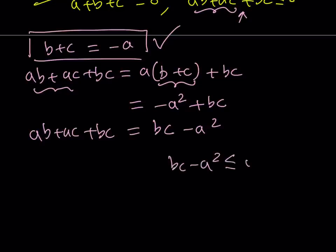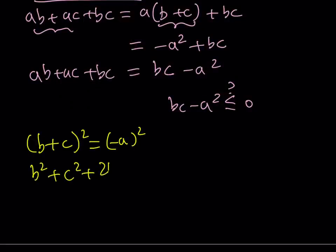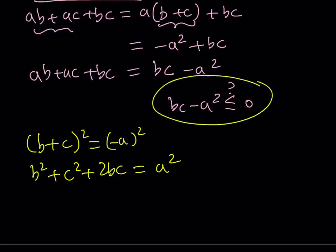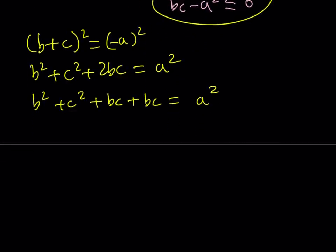If I'm trying to prove that ab plus ac plus bc is less than or equal to zero, it is basically equivalent to proving that bc minus a squared is less than or equal to zero. Since b plus c equals negative a, I'll square both sides of that expression. That gives me b squared plus c squared plus 2bc equals a squared. I'm trying to show that bc minus a squared is less than or equal to zero, so I'll subtract a squared from both sides, giving me bc minus a squared equals negative b squared minus bc minus c squared.